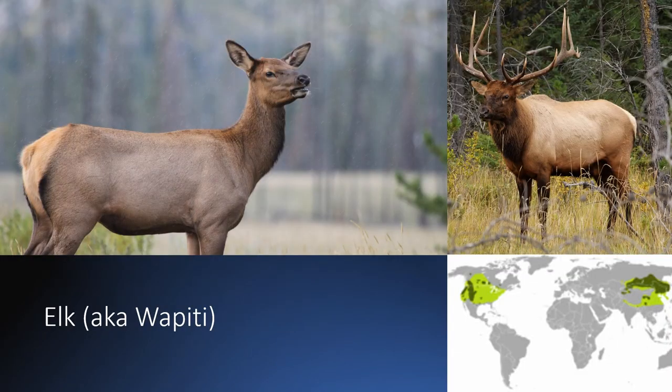Elk are a species that used to be found all over North America, but were overhunted in the past and now occupy a much smaller range consisting mostly of the western United States and Canada. They're also found in Siberia and China. Elk are notable for their dark brown head and neck, pale brown body, and cream-colored rump. The male has a shaggy neck as well as antlers with one main branch and several forks off of them.